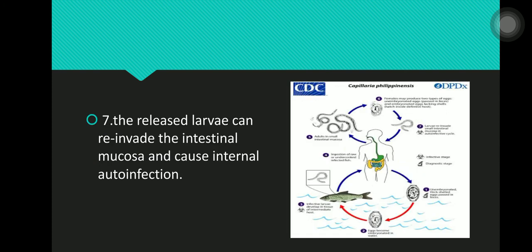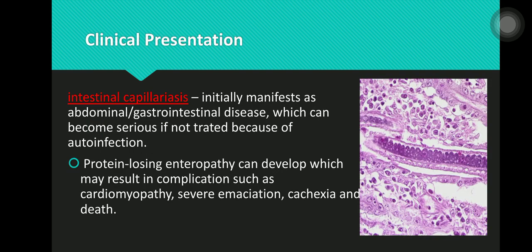In stage 7, the released larvae can re-invade the intestinal mucosa and cause internal auto-infection. Intestinal capillariasis is caused by Capillaria philippinensis. It initially manifests as abdominal or gastrointestinal disease, which can become serious if not treated because of auto-infection.